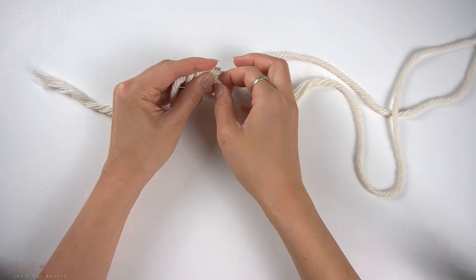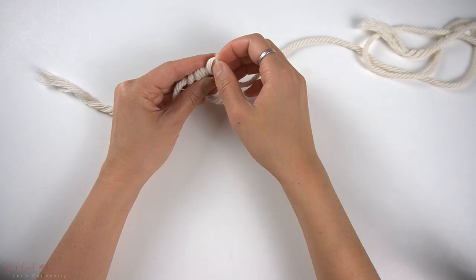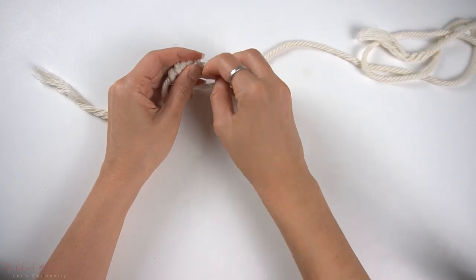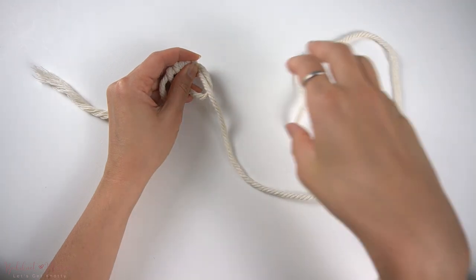You can make this ring as big or as small as you would like. The ring that I am making right here is approximately 5 centimeters in diameter.